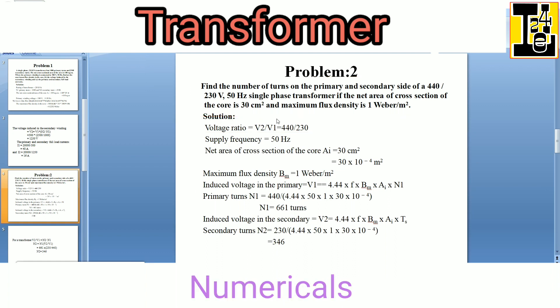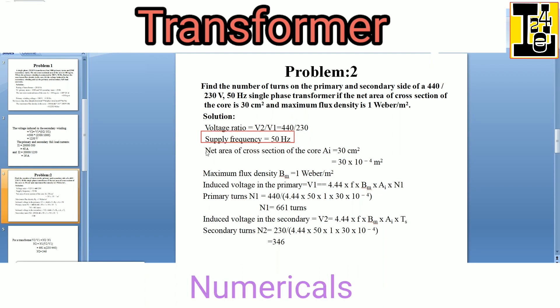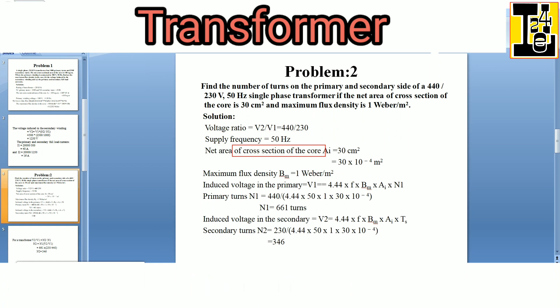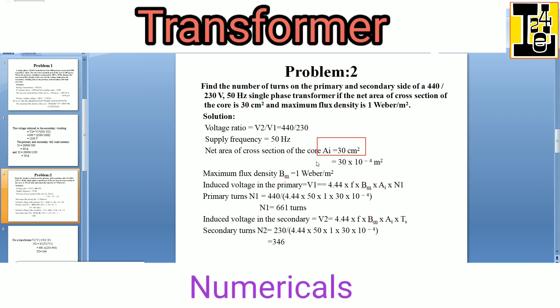We have the voltage ratio as V2 by V1. Substituting the values: 440 divided by 230, that is the voltage ratio. Supply frequency given is 50 hertz. The net cross sectional area AI is 30 centimeter square. Multiplying by 10 raised to minus 4 to convert to square meter, that is 30 into 10 raised to minus 4 meter square.